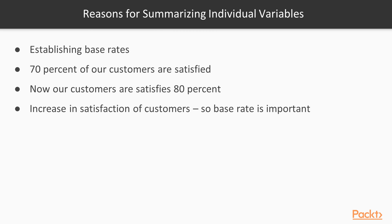A second reason why you want to summarize individual variables is because you want to establish base rates. For example, let's say that 70% of our customers are satisfied with our product. Let's say we then added a new feature to that product, and after some time, we again assess our customers. Let's say now our customers are satisfied at 80%. We can see that there was a 10% increase in that satisfaction rate. So knowing what the base rate is, is important before you make additional changes and see how those changes end up affecting your situation.